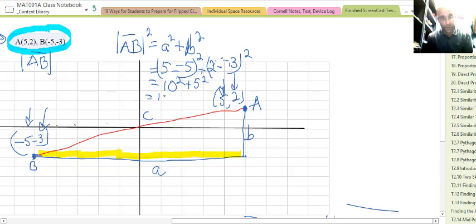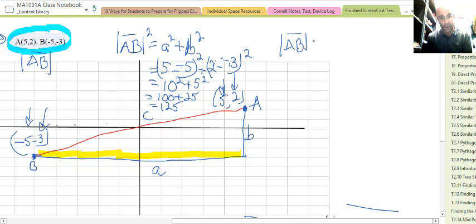Which is 100 + 25, equals 125. So we have to, for AB, we have to take the square root of that 125. Calculator says that's 11.18.